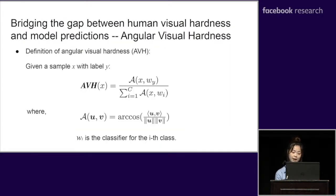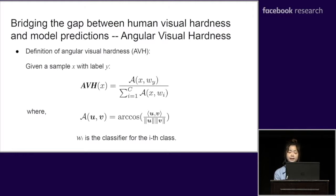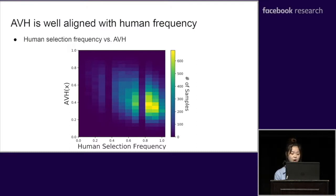Naturally, the potential remaining factor that may correlate with human selection frequency is the angle between the embedding and weight vectors. Before getting into that, we first define the metric Angular Visual Hardness, aka AVH, based on the angular information. Specifically, given a sample X and its label Y, its AVH is defined by the angle between its feature embeddings and target class weights.